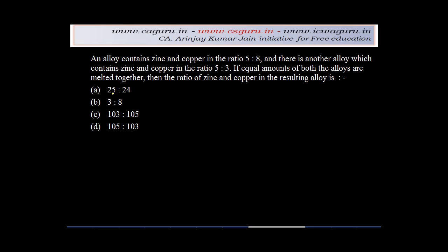An alloy contains zinc and copper in the ratio 5:8, and there is another alloy which contains zinc and copper in the ratio 5:3. If equal amounts of both alloys are melted together, then the ratio of zinc and copper in the resulting alloy is which one of the following four?